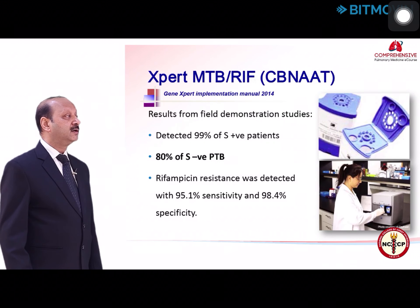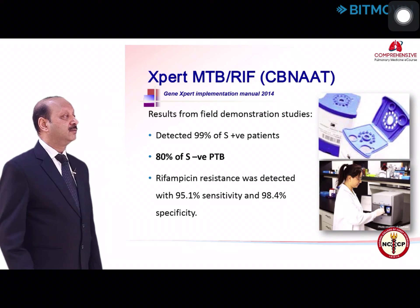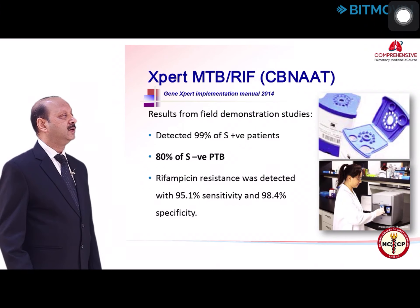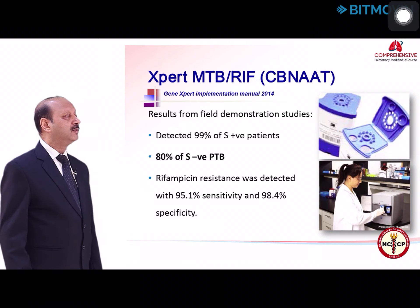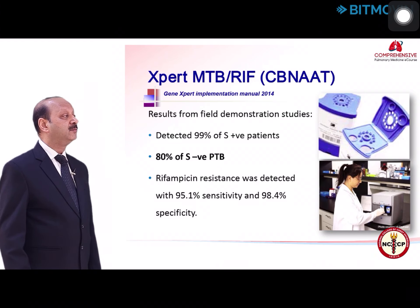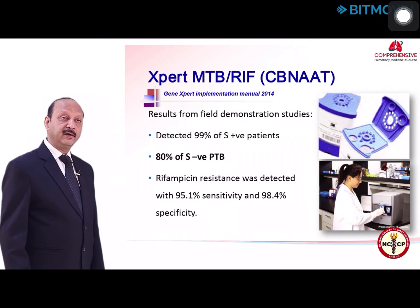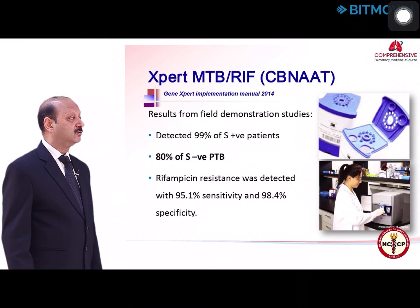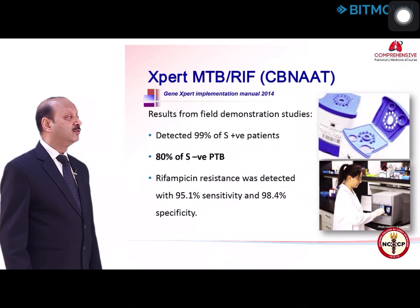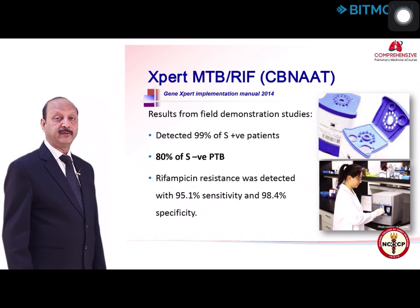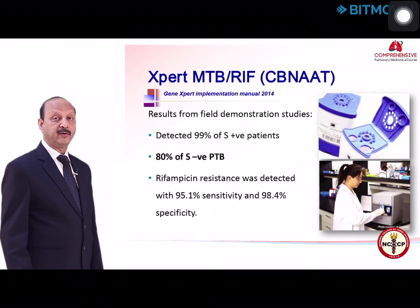The GeneXpert — also called the CB NAAT method — has shown in field studies that it can detect around 99% of smear-positive cases and even 80% of smear-negative cases. Unlike LPA, GeneXpert can be used to detect smear-negative cases. Studies have shown rifampicin resistance can be detected with 95% sensitivity and 98% specificity, a very high specificity for rifampicin resistance.